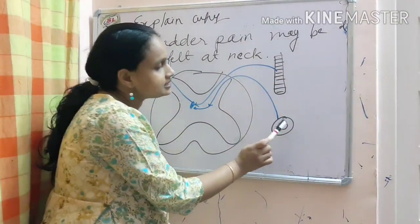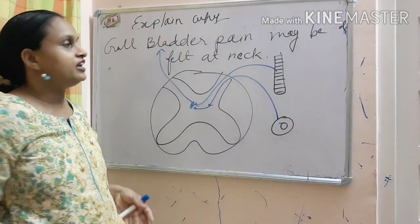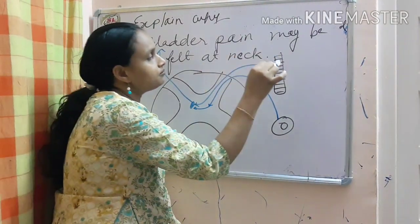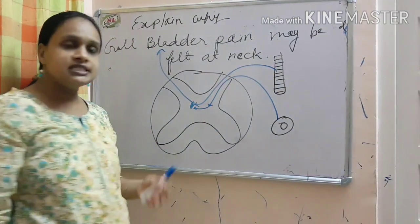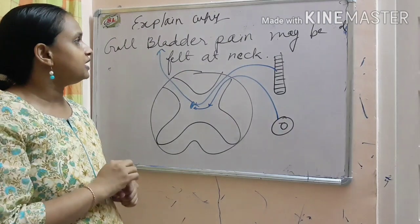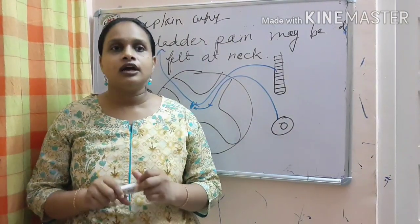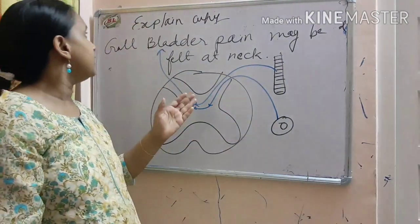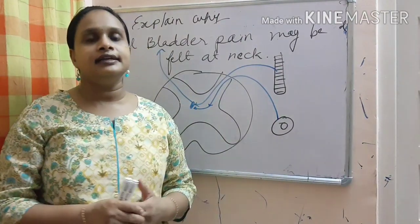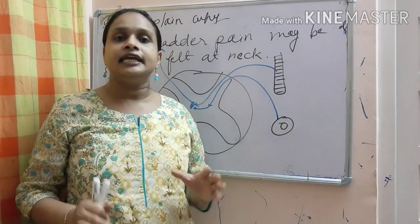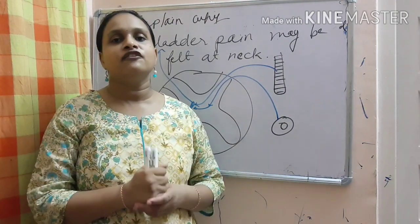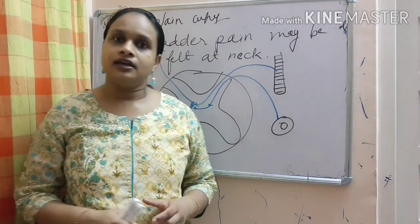Both are going to the same higher order neuron, that is the second order neuron is getting impulse from both the structures. So, whenever pain is there, the brain will feel that it is coming from here because it cannot differentiate the pain coming from here or here. This is the convergence theory and one is facilitation theory. These are all about the referred pain or gallbladder pain may be felt at neck. Same reason is behind the diaphragmatic pain getting referred to the shoulder tip and there are so many phenomena of referred pain in our body.